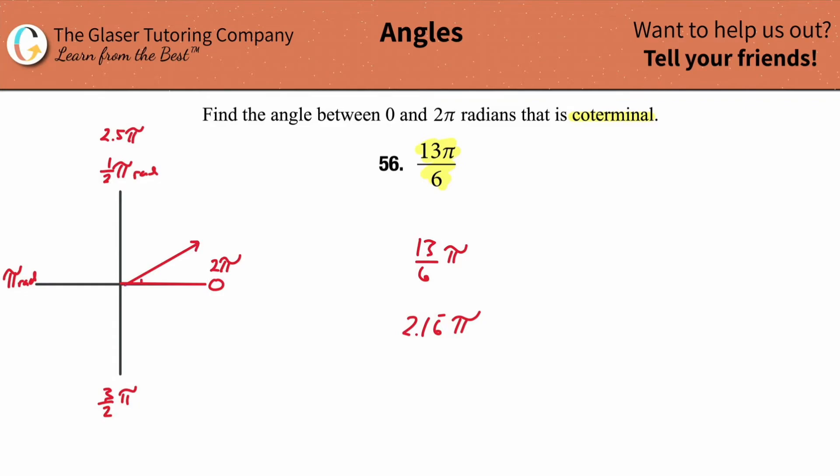Now what happened is this. This full rotation represented, that full thing represented 2π. And then we had now, what's left over, is we had 0.16 repeating π. Right? Doesn't that make sense? We had that left over.